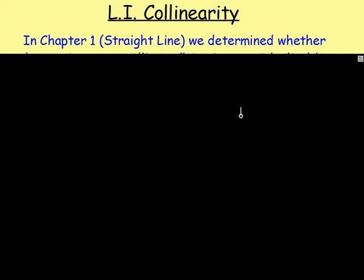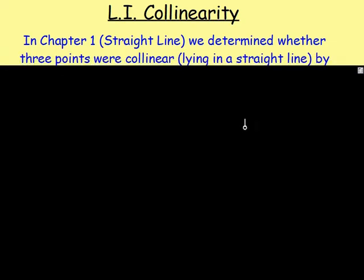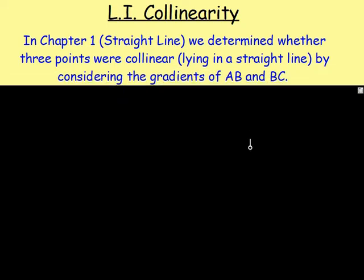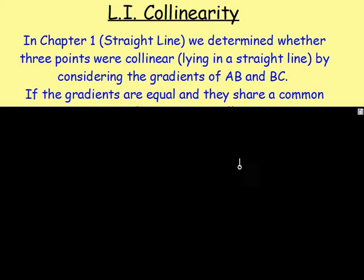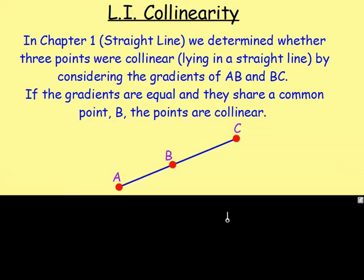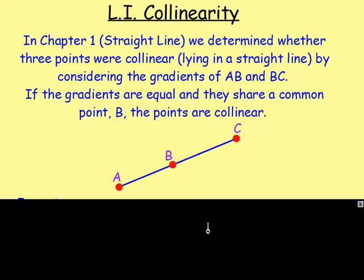You already know that word — you've already come across it before. In Chapter 1, looking at the straight line, we were determining whether three points were collinear, which means do they lie in a straight line, by considering the gradients of AB and BC. If we found that the gradients were equal, then there is also a common point B in AB and BC, meaning the three points would be collinear, so they would lie in a straight line.